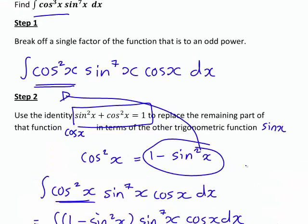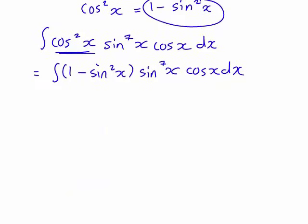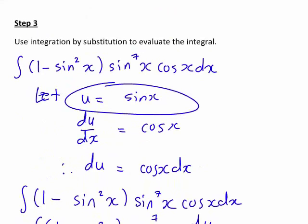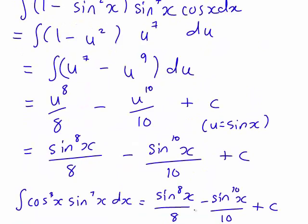We then rewrote everything else in terms of the other trigonometric function, sin x, by using our trigonometric identity, sin squared x plus cos squared x equals 1. This then allowed us to use integration by substitution, with u being sin x and the cos x dx part being du. And as a result of that, we were then able to determine the answer.